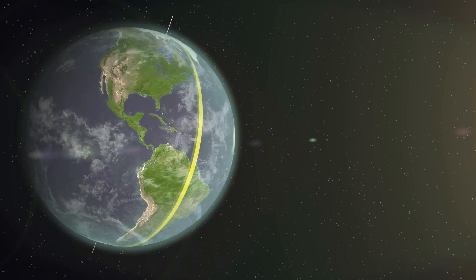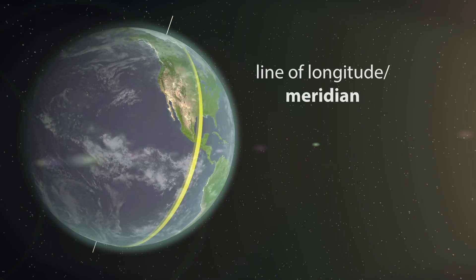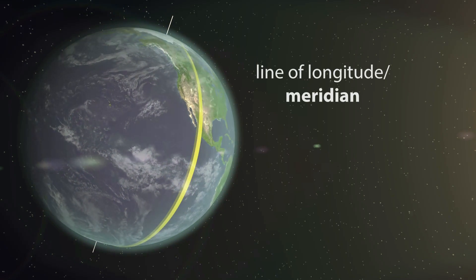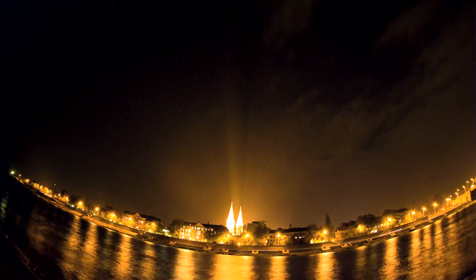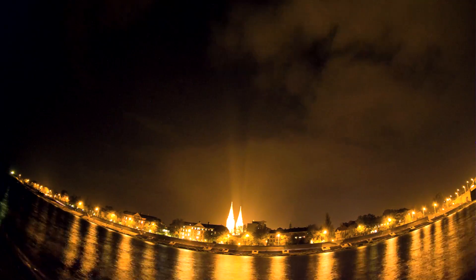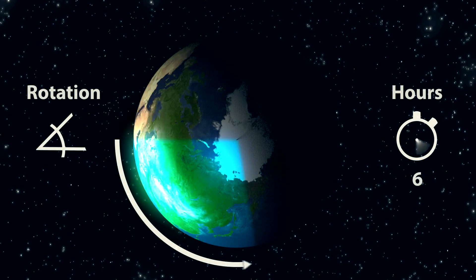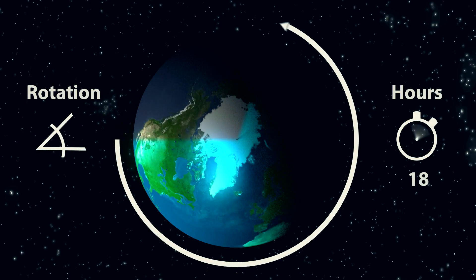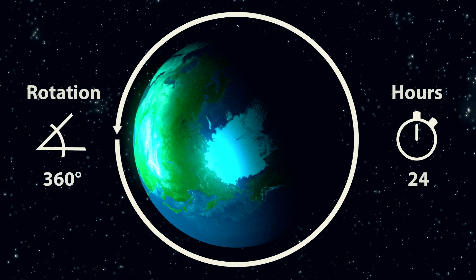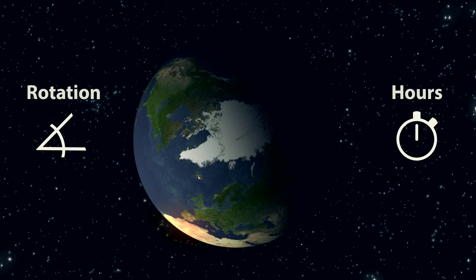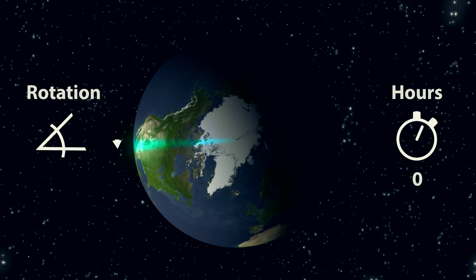This is why we also use the term meridian, meaning midday in Latin, for a line of longitude. The Earth rotates 360 degrees around its axis in 24 hours, so in one hour it covers 15 degrees.